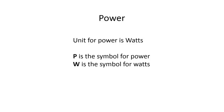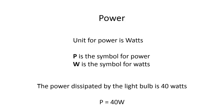When talking about power, the unit that we use is watts. P is the symbol for power, and W is the symbol for watts. In a sentence you could say the power dissipated by the lightbulb is 40 watts, or P equals 40W.